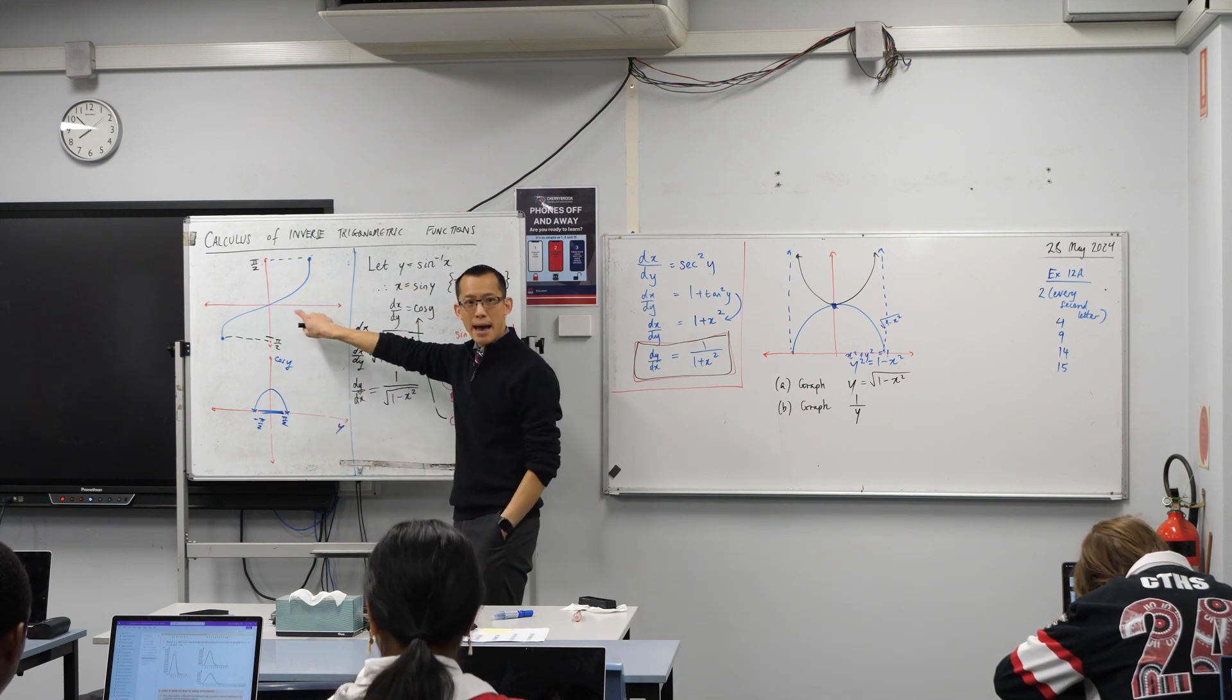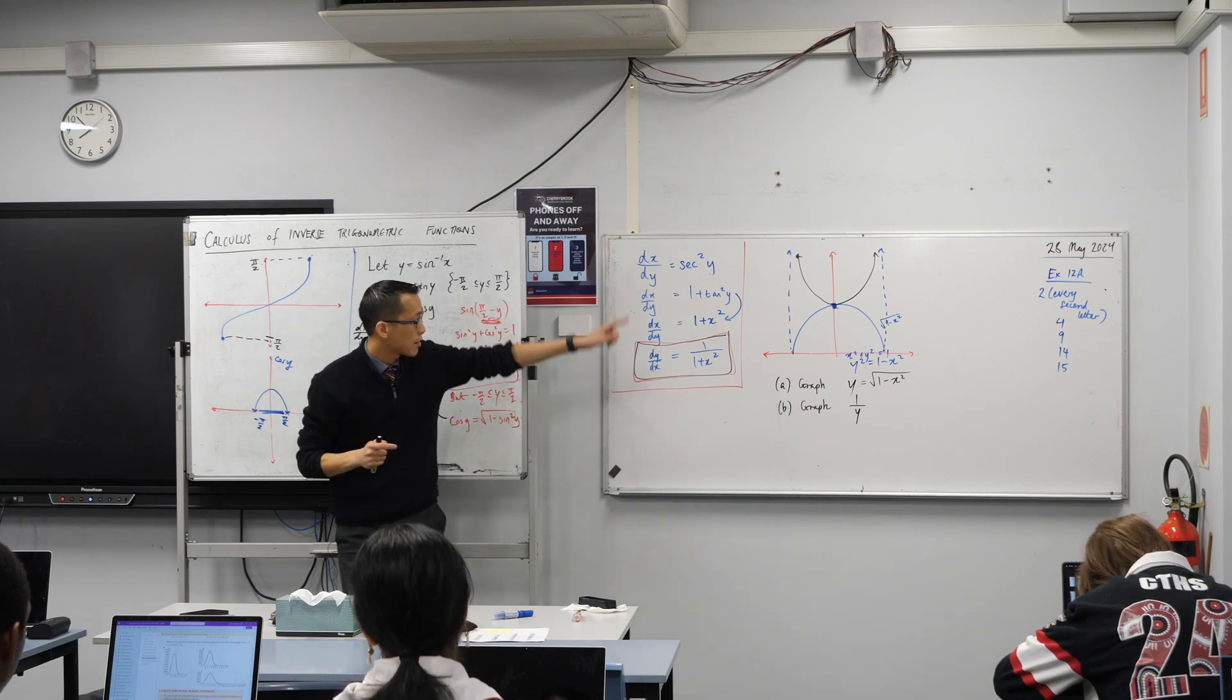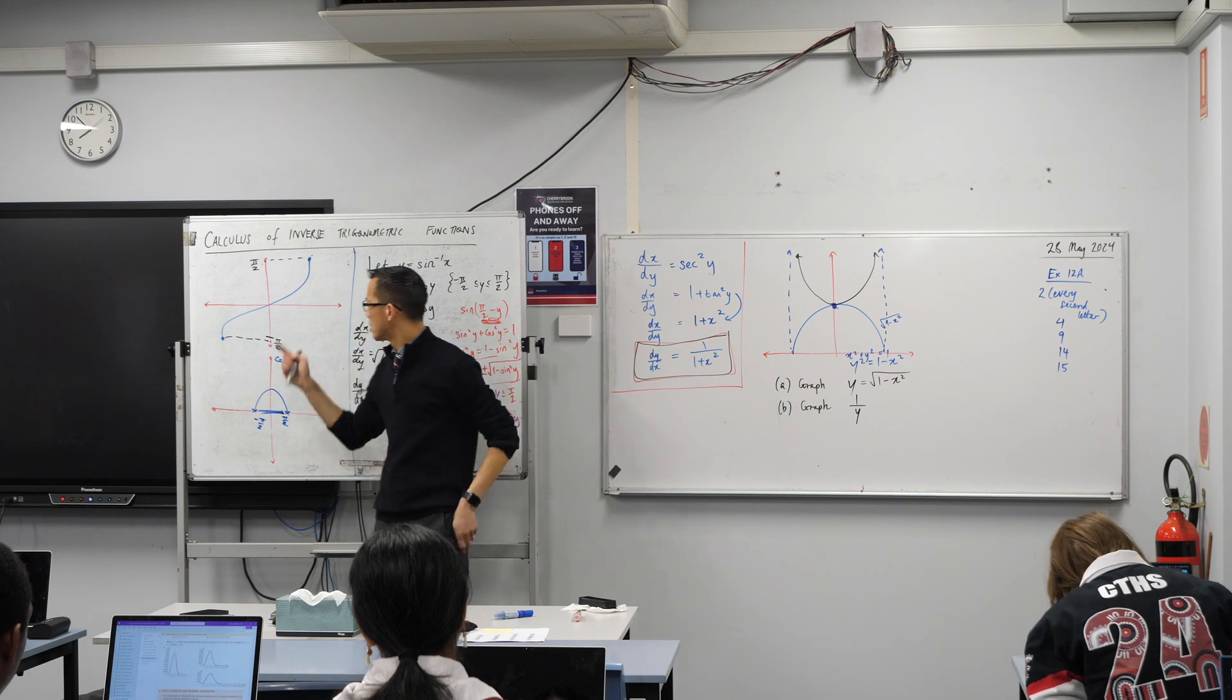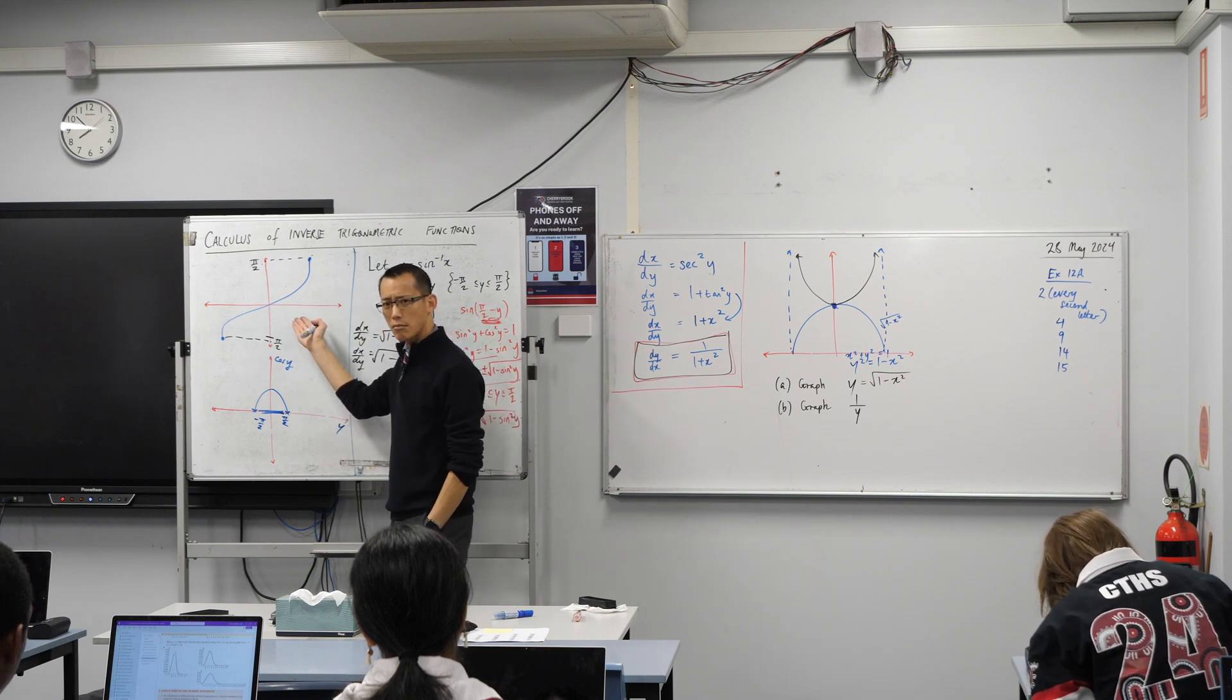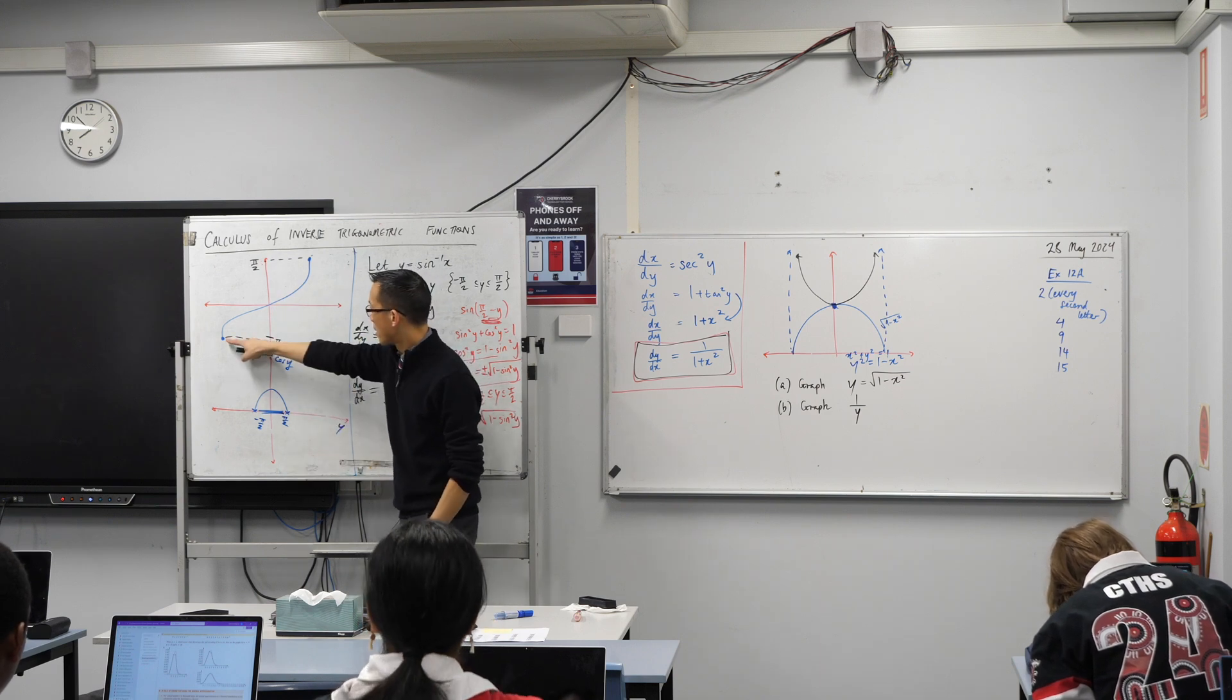Second thing, does it match what you expected to see? This is the original function. Apparently that's the derivative. Does it sort of check out? It should. Let's think about those same dot points we did for tan. Number one, what can you tell me about the sign of this derivative?